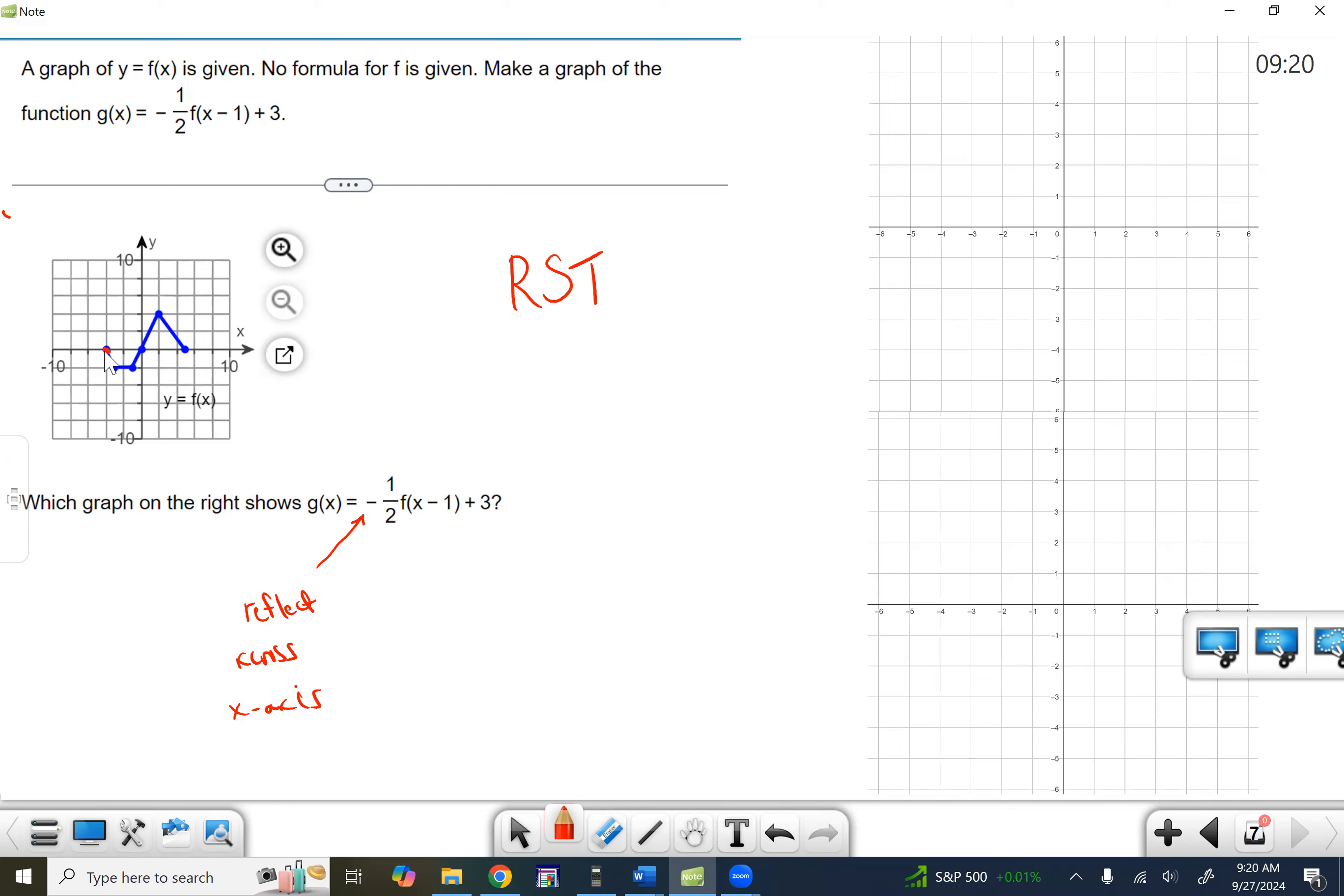So any point on the x-axis stays. This one that's below will come above. This one that's below will come above. This will stay. This one that's above will go below, and this one that's on it will stay. So here is our reflection across the x-axis.